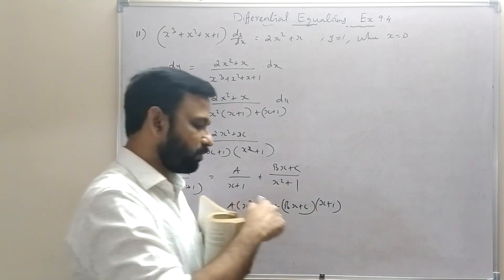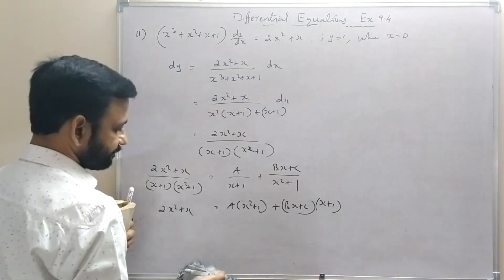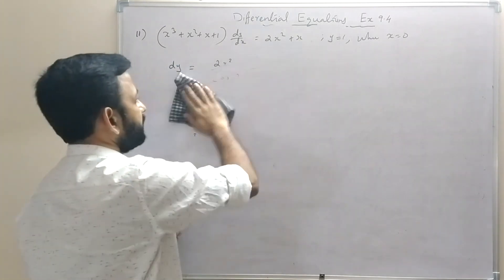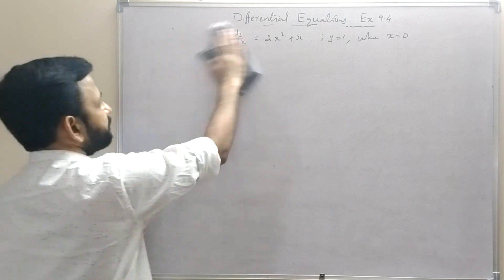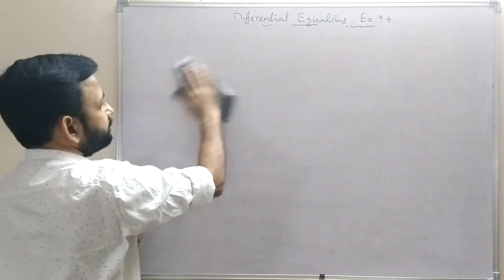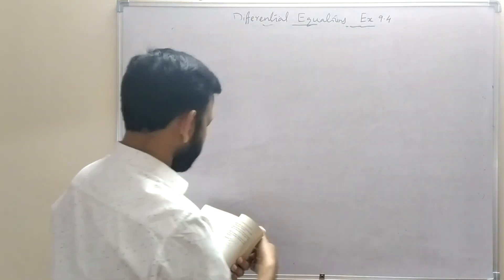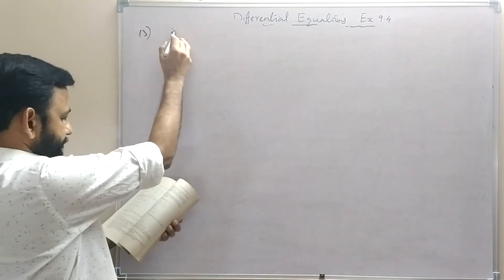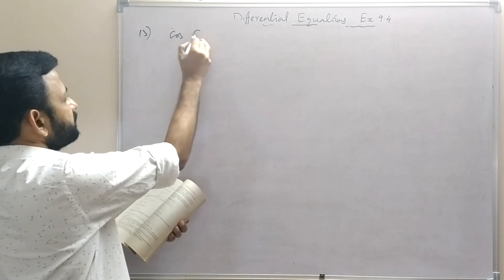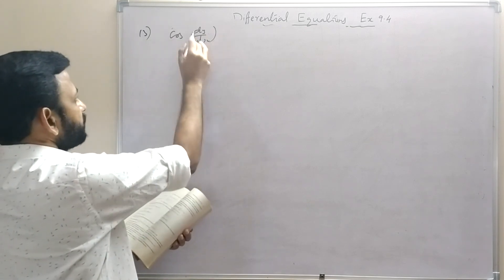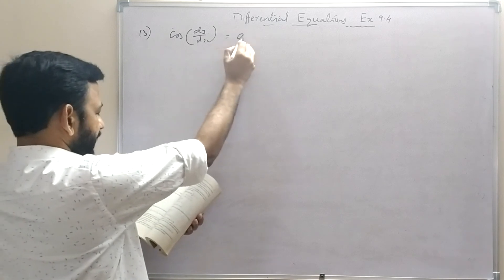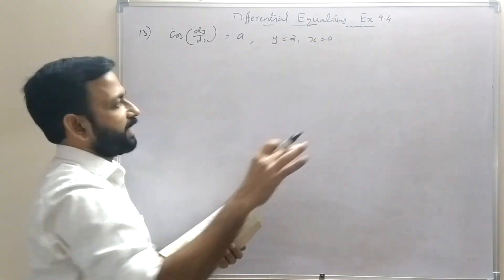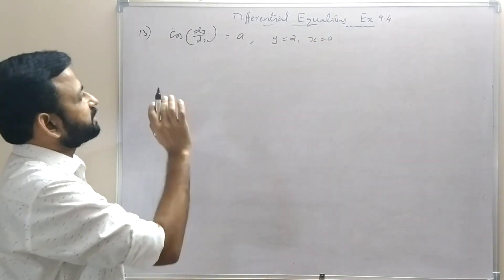Question 13: cos(dy/dx) = a, when y = 2 and x = 0. Therefore dy/dx = cos⁻¹(a), which is a constant. So dy = cos⁻¹(a) dx. Integrating: y = cos⁻¹(a) · x + c.